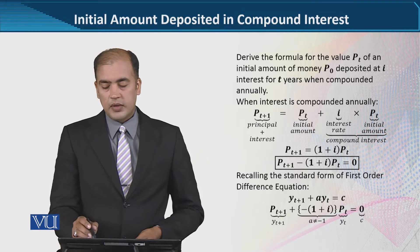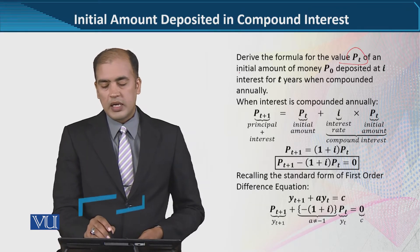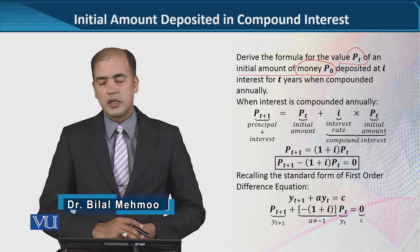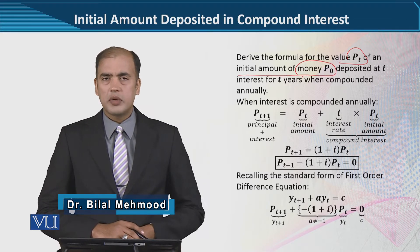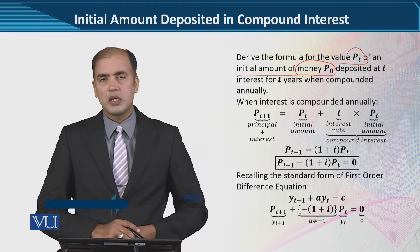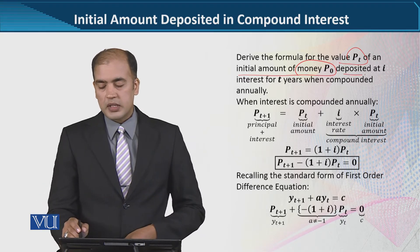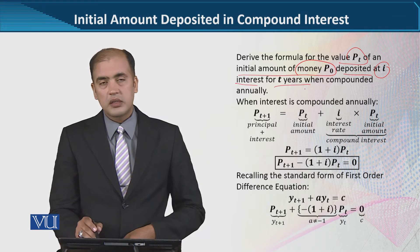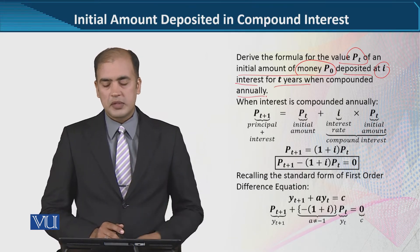Here, we are going to derive the formula for the value of Pt — the value of an initial amount of money, that is P0. So, the initial investment is P0. We want to develop a time path for the overall amount Pt. And when we deposit it, i is the interest rate for t years when compounded annually.